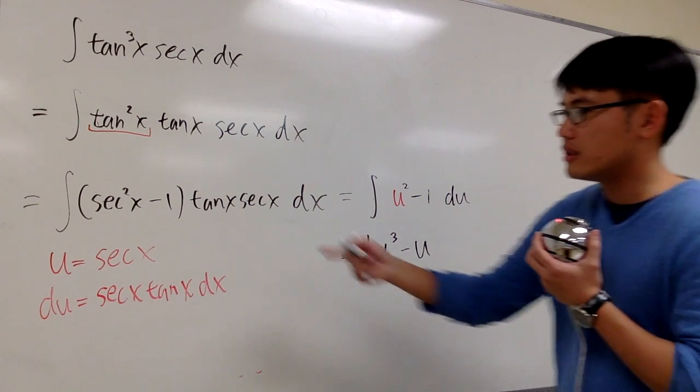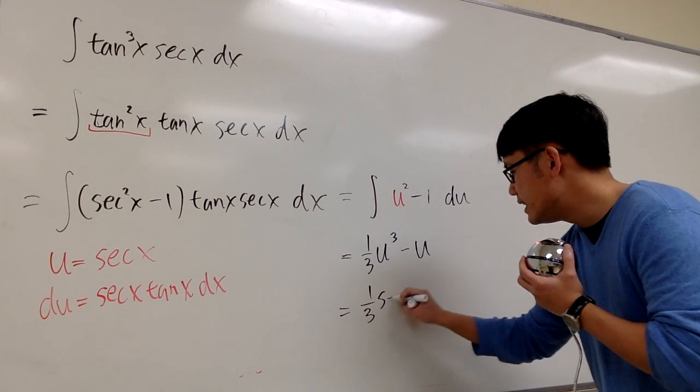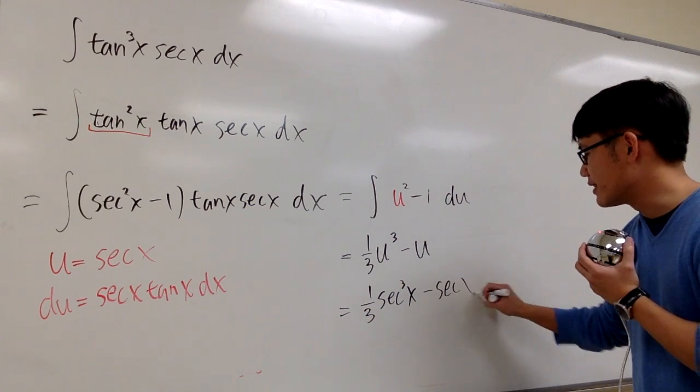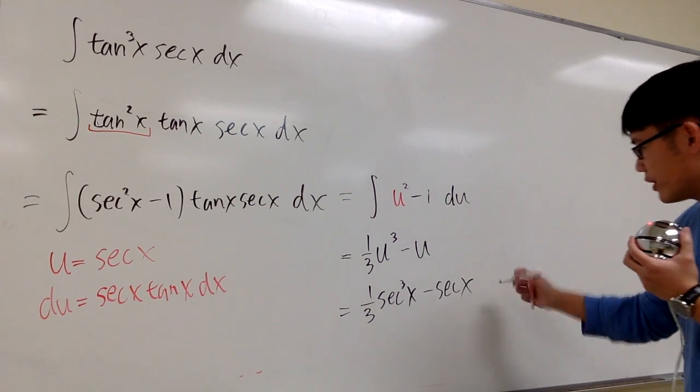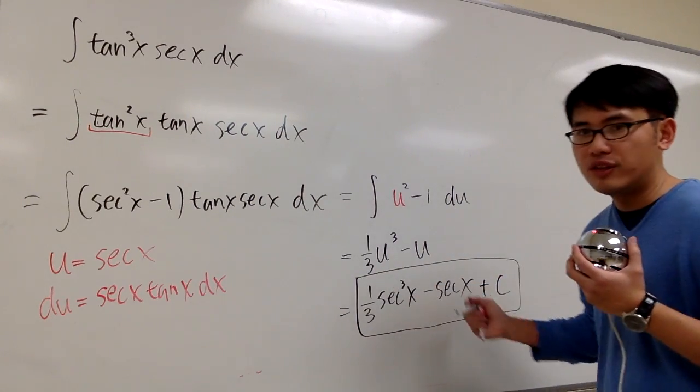And then u is what? u is secant. So we have 1 third secant to the third power x minus another one, minus another secant. And that's it. We are done. Plus c. Box the answer. And get ready for the next one.